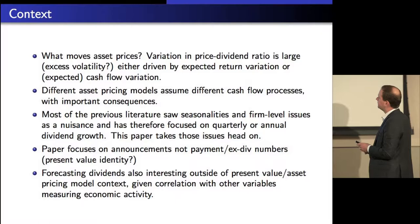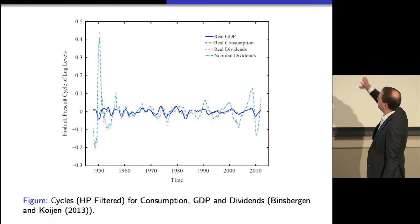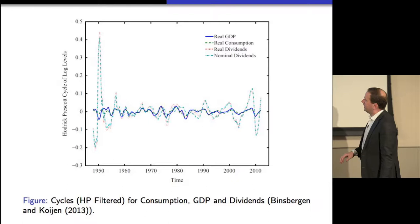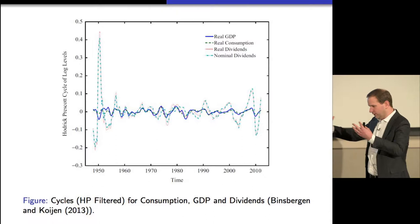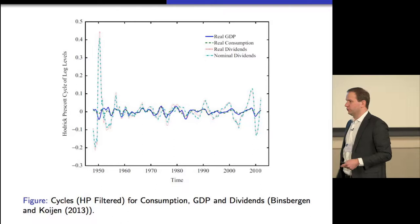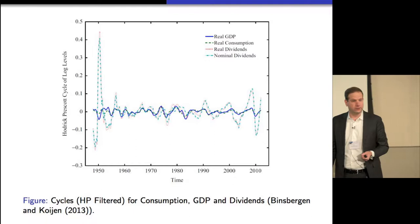If you look at the Hodrick-Prescott filtered series for real GDP, real consumption, real dividends, and nominal dividends, the idea that dividends are a levered claim on consumption in many periods actually holds quite nicely. So if you can forecast in real time what dividends are going to do over the next year, we should also expect that to have some nice impact for forecasting economic growth and consumption growth. I think the authors have shown that we can do that.